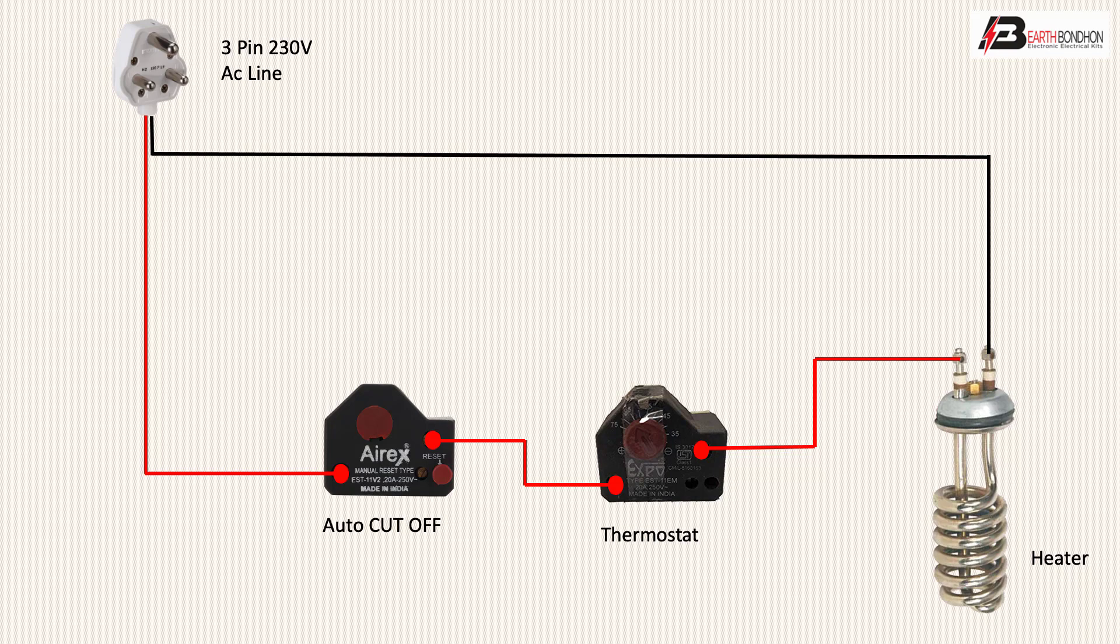For indicator lights - OFF indication light and ON indication light. Negative terminals of indicator lights connect to neutral. Positive terminal of OFF light connects to auto cut-off output. Same connection for ON indicator light - positive terminal connects to thermostat output.